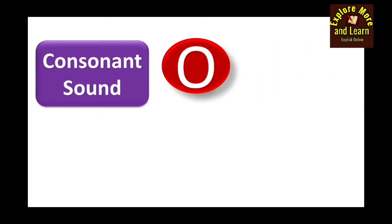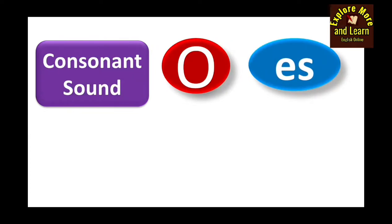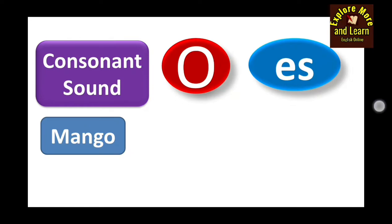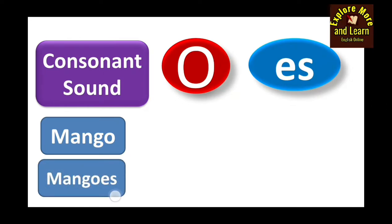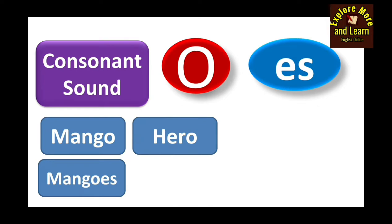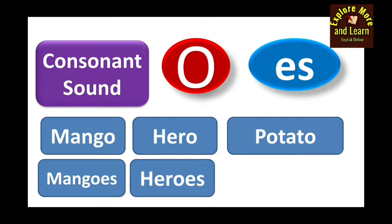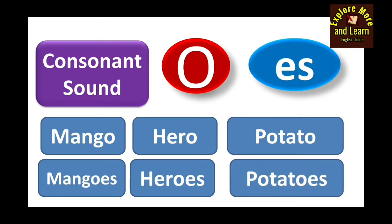But when a word ends with the letter O and a consonant sound appears before the letter O, we add ES to make the plural — without removing the letter O, unlike what we did with Y. For example: 'mango' → 'mangoes'; we have not removed the letter O but have added ES. Similarly, 'hero' → 'heroes,' and 'potato' → 'potatoes.'